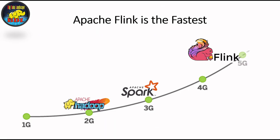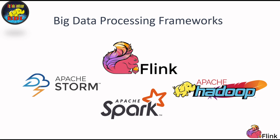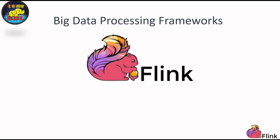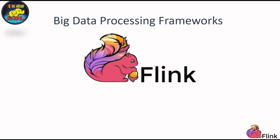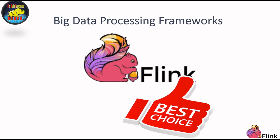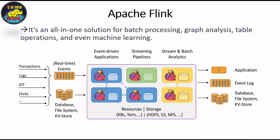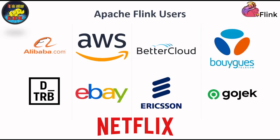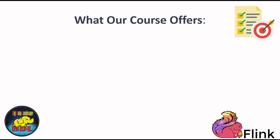Picture this: if Hadoop was like the old 2G network and Spark was like 3G, then Apache Flink? It's the 5G superstar of big data processing. But it's not just about streaming data — Flink's your all-in-one toolkit: batch processing, graph analysis, table operations, and even machine learning. The big players like Alibaba and Netflix are all in on Flink for real-time data magic, and now it's your turn to get in on the action.